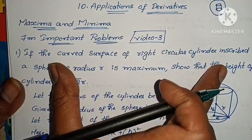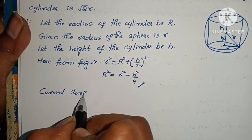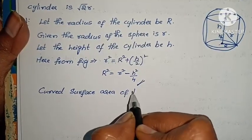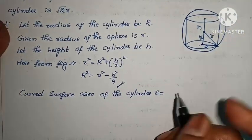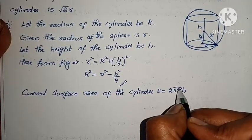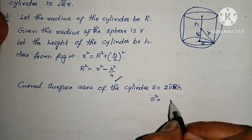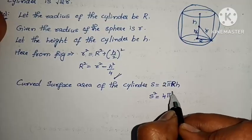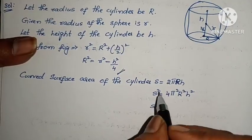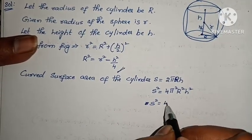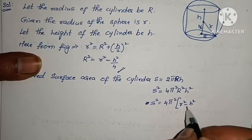The curved surface area of the right circular cylinder: S = 2πrH. Here r is the radius of the cylinder, so S = 2πrH. Squaring both sides gives S² = 4π²r²H².